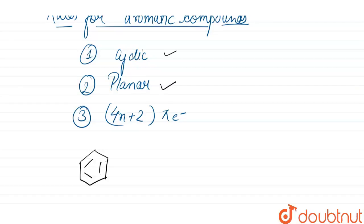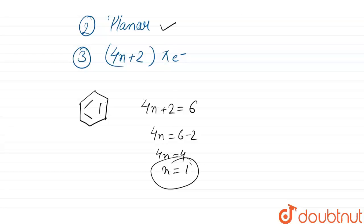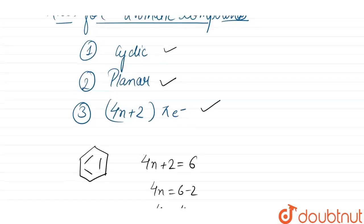Each bond contains two electrons, so that means six electrons total. Four n plus two equals six, so four n equals four, and n equals one. Since n can be zero, one, two, three, and so on, benzene satisfies the condition for an aromatic compound.